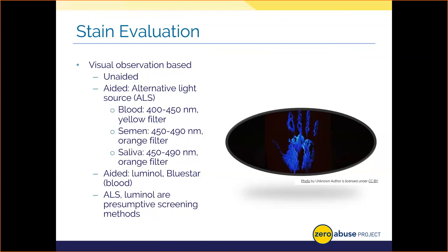Luminol doesn't impact DNA testing, so it can be used on samples to detect potential blood. Be aware that blood-based fluorescent chemicals are presumptive measures, as there are false reactions that can give off the presence of blood when it's not really there. Things such as cigarette smoke or ice melt for sidewalks can actually give a false result with these chemicals.